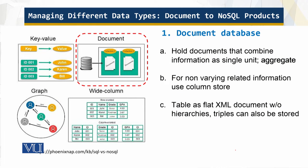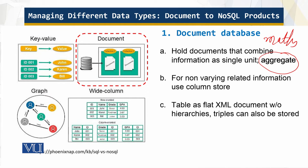Document databases are sometimes called aggregate databases because they tend to hold documents that combine information in a single logical unit. This 'aggregate' here is not mathematics. In online stores, for example, orders and related delivery and payment addresses and order items can be thought of as a tree structure. Data structures are known upfront, and it's likely they won't vary, and you'll want to do column operations over them — they are not varying.